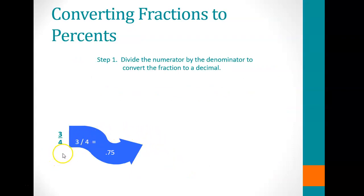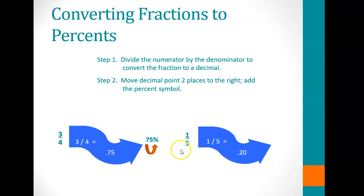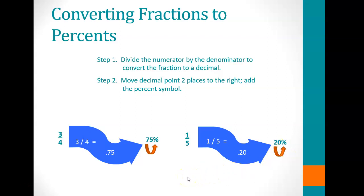Converting fractions to a percentage: three-fourths equals 0.75 as a decimal. To go from a decimal to a percentage, move the decimal two spaces to the right, and that becomes 75%. Similarly, one-fifth as a fraction converts to 0.20 as a decimal, then moving the decimal two spaces right and adding the percent sign gives 20%.